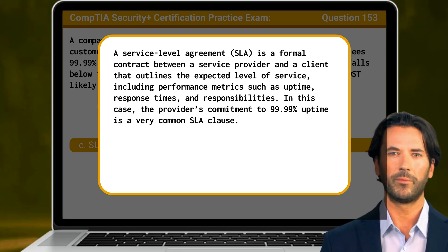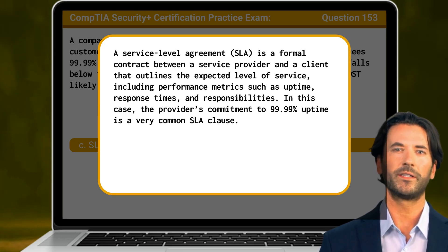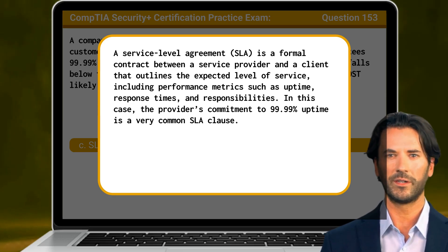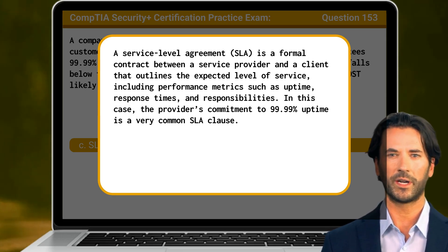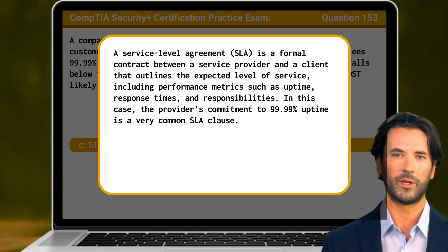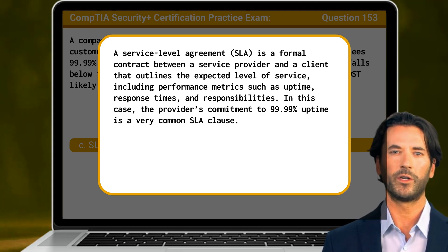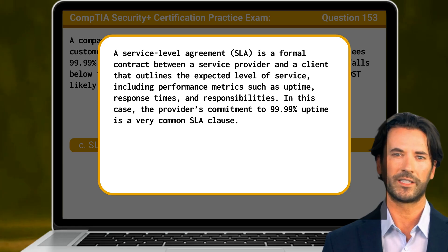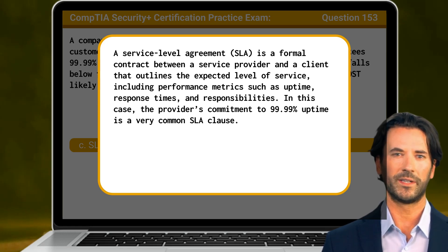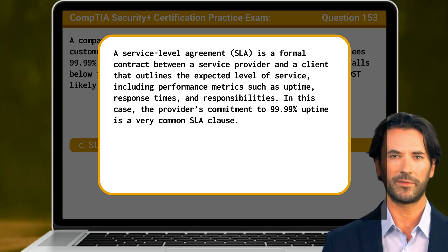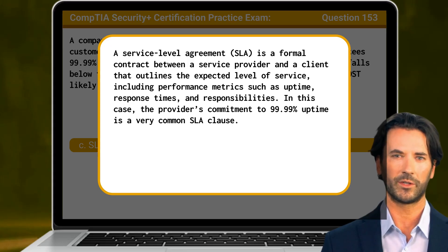The answer is C: SLA. A Service Level Agreement, or SLA, is a formal contract between a service provider and a client that outlines the expected level of service, including performance metrics such as uptime, response times, and responsibilities. In this case, the provider's commitment to 99.99% uptime is a very common SLA clause.